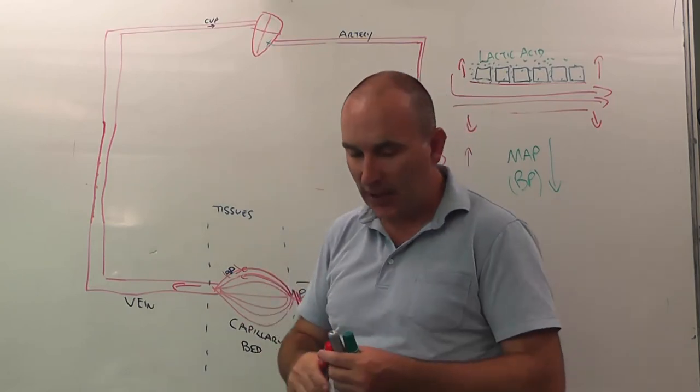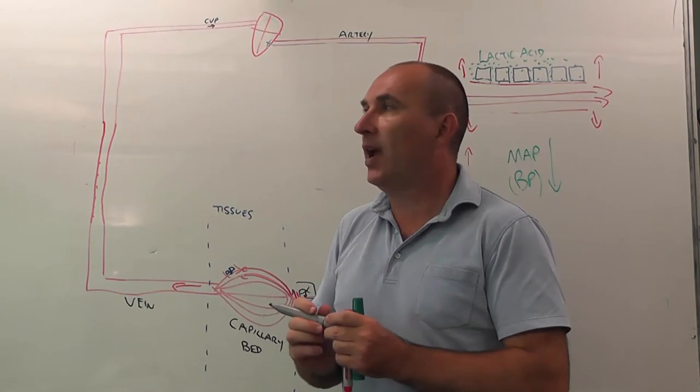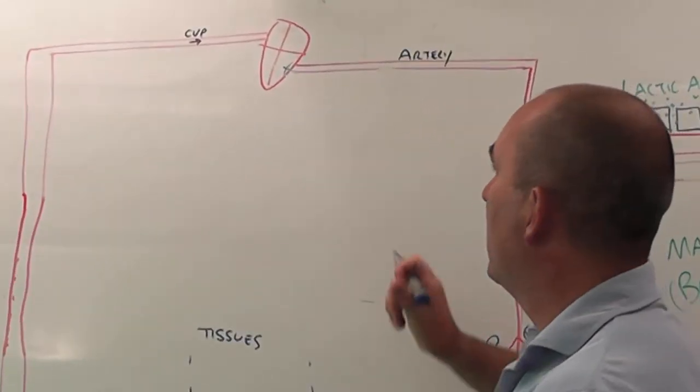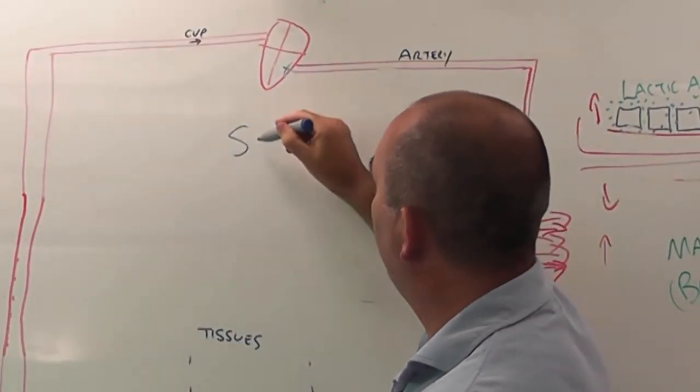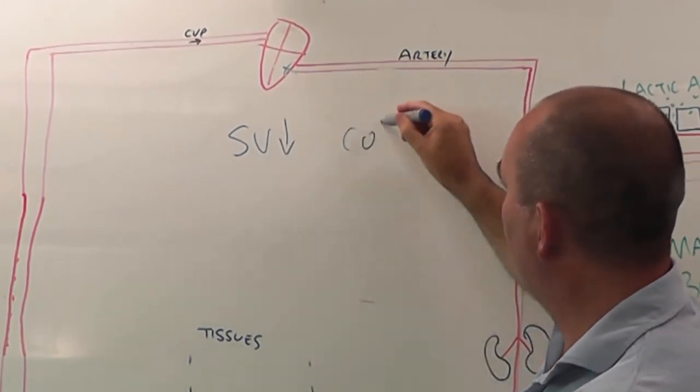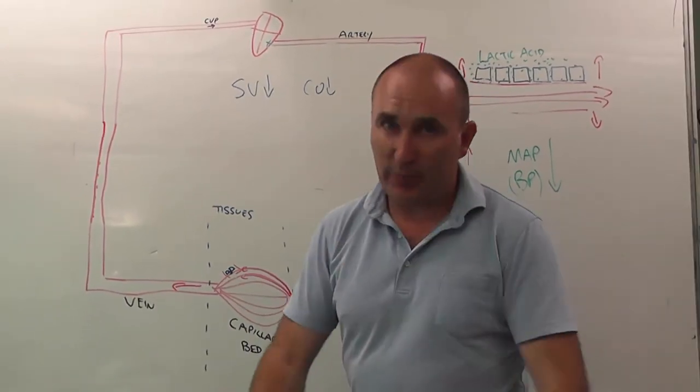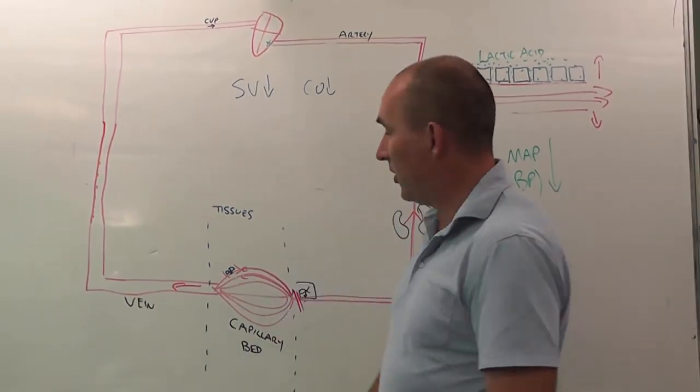If the heart becomes acidotic, what happens is we have a drop in contractility and therefore we have a drop in stroke volume, which means that cardiac output drops off, which makes the whole situation worse. And there's another profound effect that occurs in hypovolemic shock.